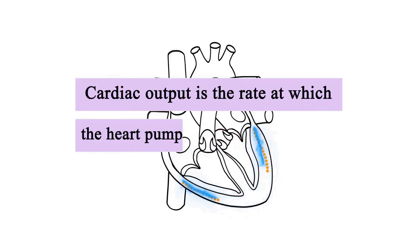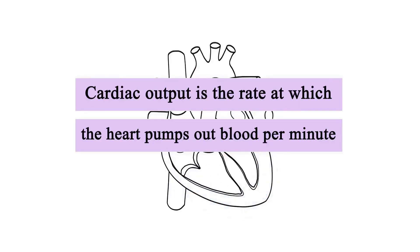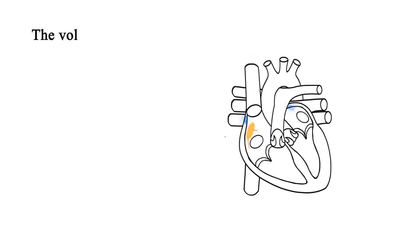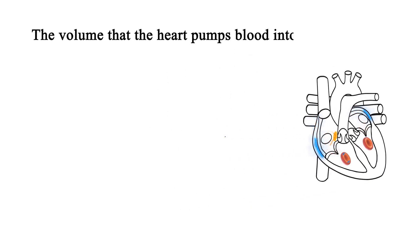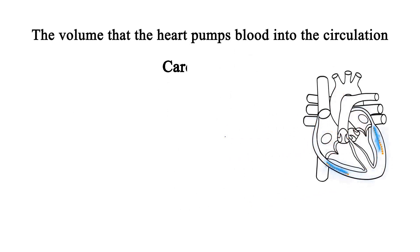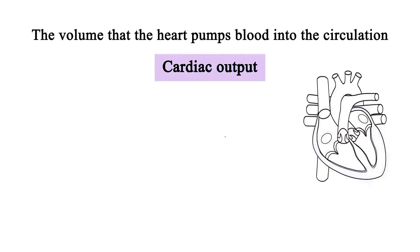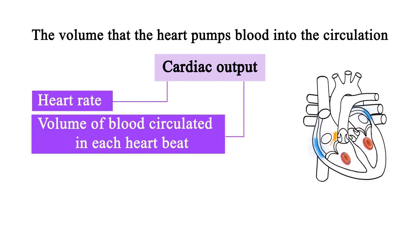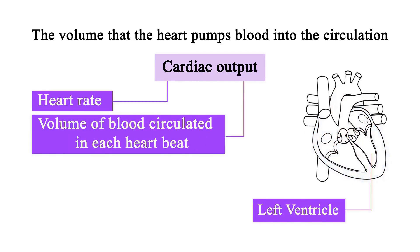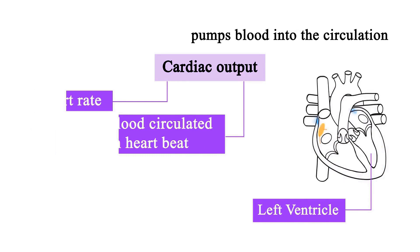Cardiac output is the rate at which the heart pumps out blood per minute. The volume that the heart pumps blood into the circulation is known as cardiac output and is dependent on the heart rate and the volume of blood circulated in each heartbeat. The left ventricle provides the cardiac output for the systemic circuit.